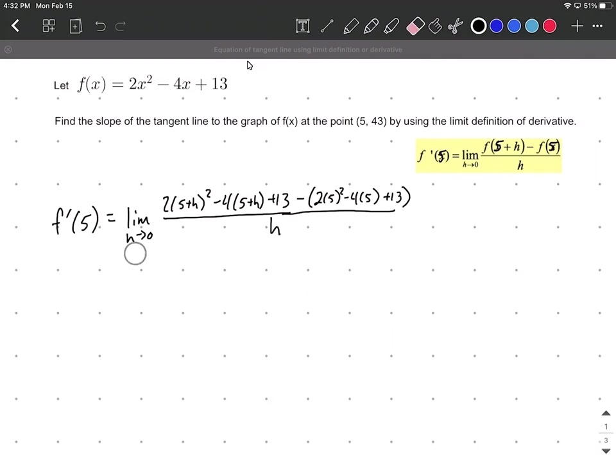At this point, we want to plug in 0 for h, but we can't because h is in the denominator. Our goal is to get rid of that h from the denominator. Continuing with algebra to simplify the numerator: 2(5 + h)(5 + h) minus distributing the negative 4 to each term.